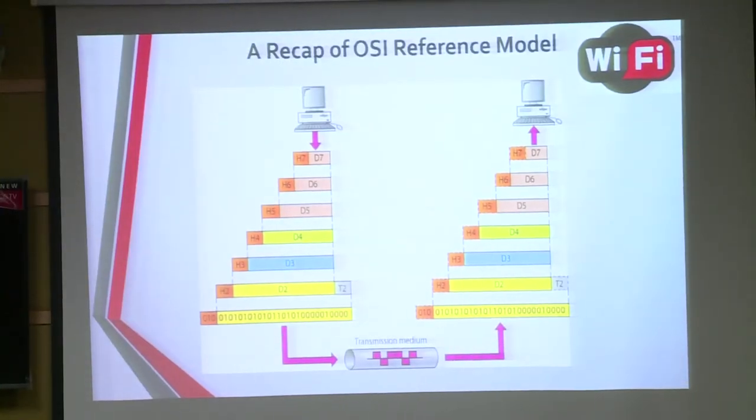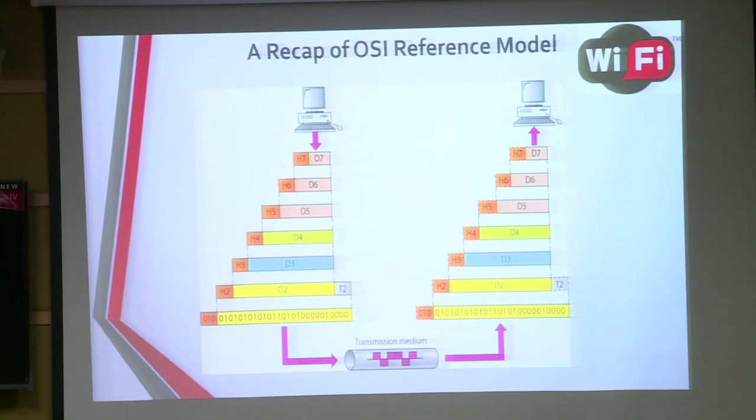For the peer-to-peer process, each layer, when communicating with another layer, adds additional information called a header. For example, layer 7 (application layer) passes data to the presentation layer and adds a header — which is additional information to secure the communication. Layer 6 adds a header, layer 5 adds a header, layer 4 adds a header, and up to layer 2 it also includes a header as well as a trailer. This process of adding headers is called encapsulation, and this process is reversed on the receiving side — which is called decapsulation.